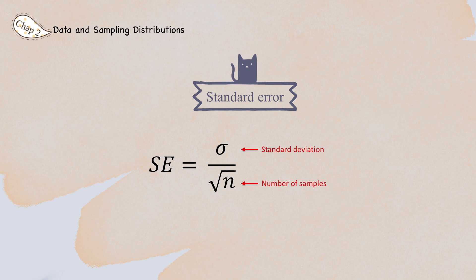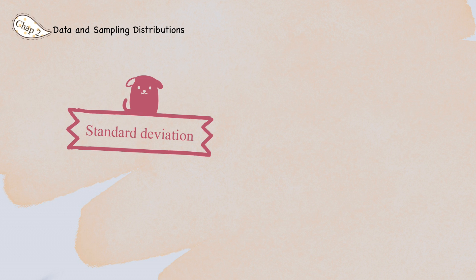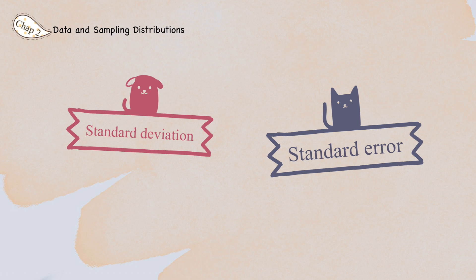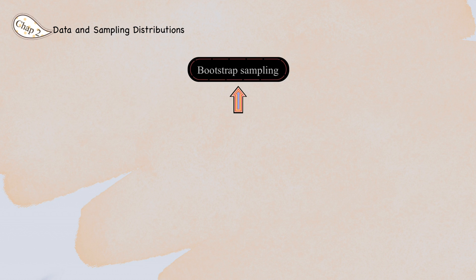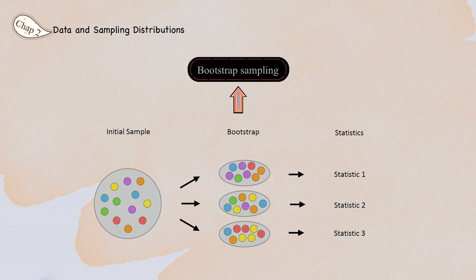An important measure in the sampling distribution of a statistic is the standard error — the metric representing the variability of the sampling distribution. Do not confuse standard deviation, which measures the variability of individual data points, with standard error, which measures the variability of a sample metric. Collecting entirely new samples to estimate standard errors is typically not feasible in practice. Instead, you can use bootstrap resamples, which have become the standard way in modern statistics to estimate the standard error of a statistic or model parameters.